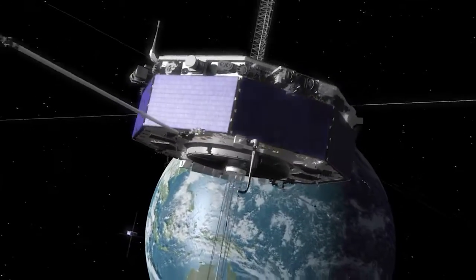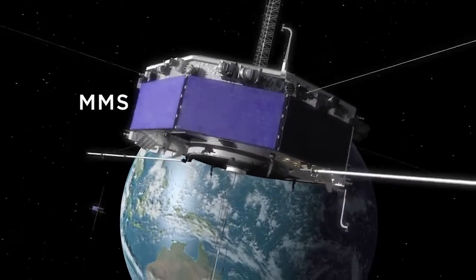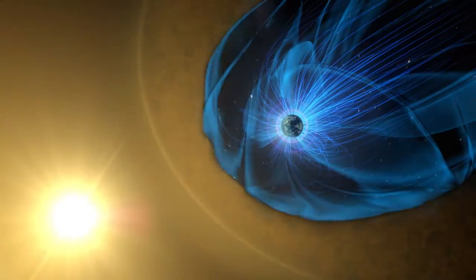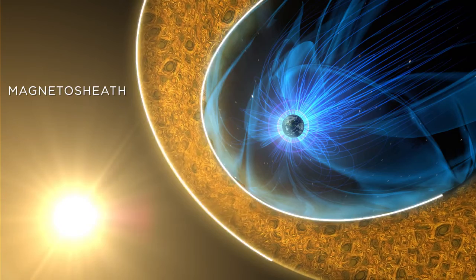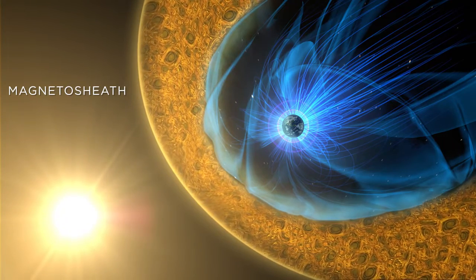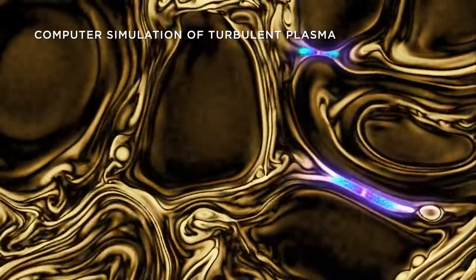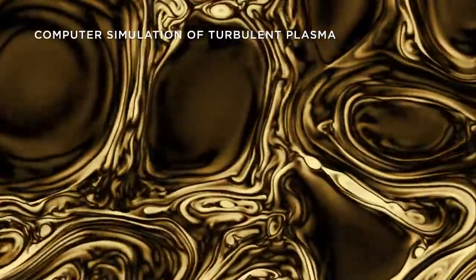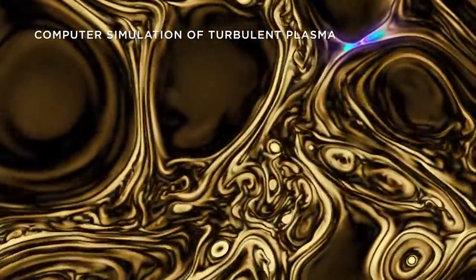Now in a new study, MMS caught the process occurring in a new region. For the first time, magnetic reconnection was detected in the turbulent magnetosheath, the boundary between the magnetosphere and solar wind. This region is made up of turbulent plasma. It's one of the most chaotic regions in near-Earth space.